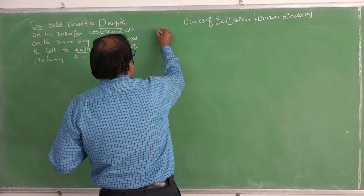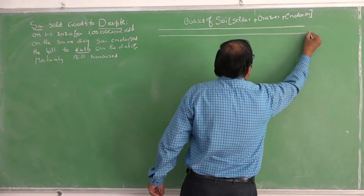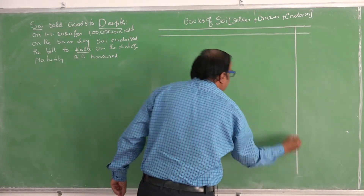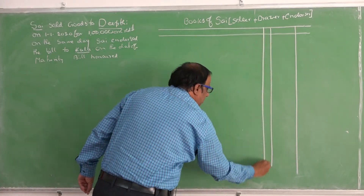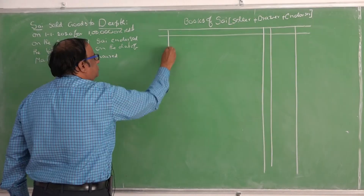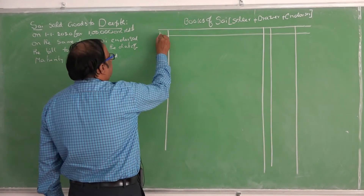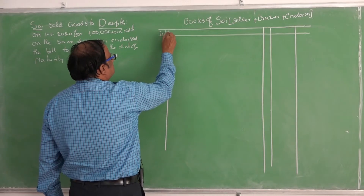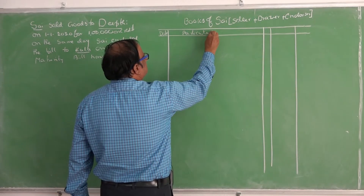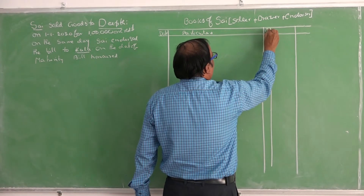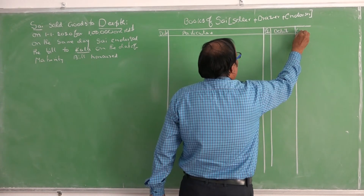Now we can draw the journal entries. Journal entries in the books of Saai. The format is: date, particulars, LF number, debit, and credit.